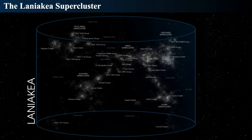Looking more locally, the Laniakea supercluster encompasses many of the local clusters of galaxies around us, centered roughly on the local group. It includes the Virgo cluster and other clusters, containing roughly 100,000 galaxies stretched over approximately 500 million light-years, with approximately 10^15 solar masses. It has four sub-parts that were once considered separate subclusters, but Laniakea has been shown to be gravitationally bound.